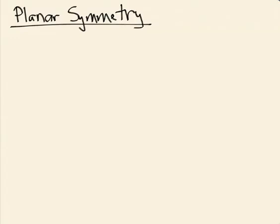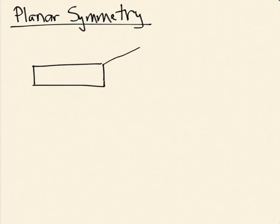One last example of applying Gauss's Law is the case of planar symmetry. Let's imagine a slab that's filled with charge. To really have planar symmetry in the way needed for the Gauss's Law calculation, this has to be a big slab. Let's draw the axes here.